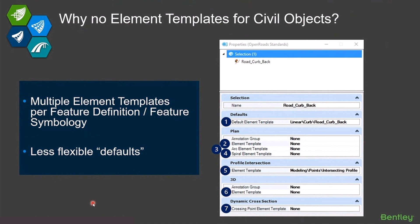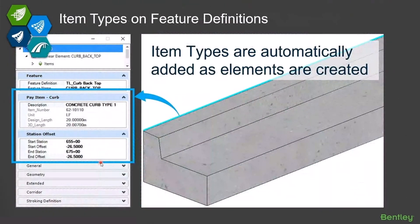The other reason is that element templates and standard item types are far less flexible at having default values than what we can provide you through feature definitions. So you can put an item type on a feature definition.